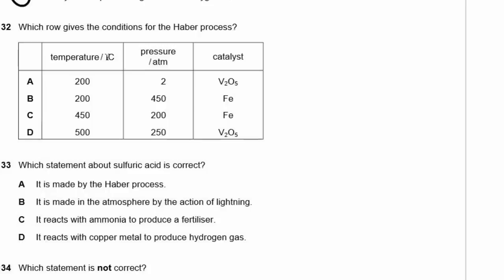Question 32. Which row gives the conditions for the Haber process? The conditions are: iron catalyst, 200 atmospheres pressure, and 450°C. The answer is C.